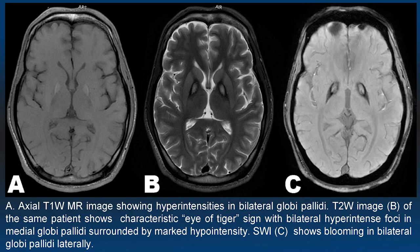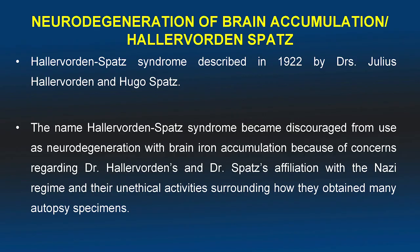This case was performed on a 3 Tesla scanner. This patient had psychiatric disturbances. Neurodegeneration with brain iron accumulation, or Hallwarden-Spatz syndrome, was first described in 1922 by Julius Hallwarden and Hugo Spatz.